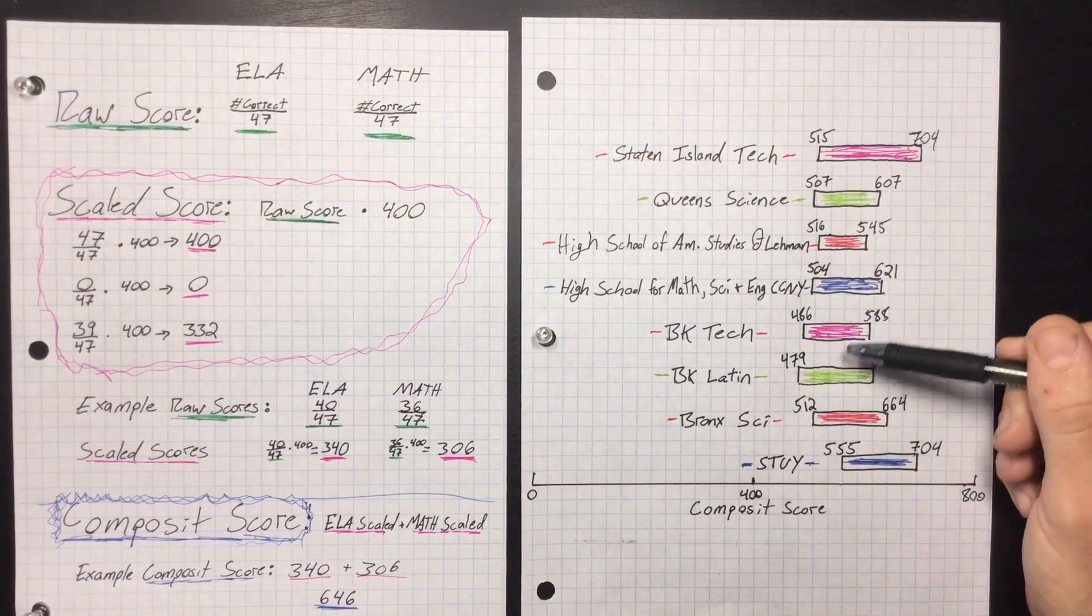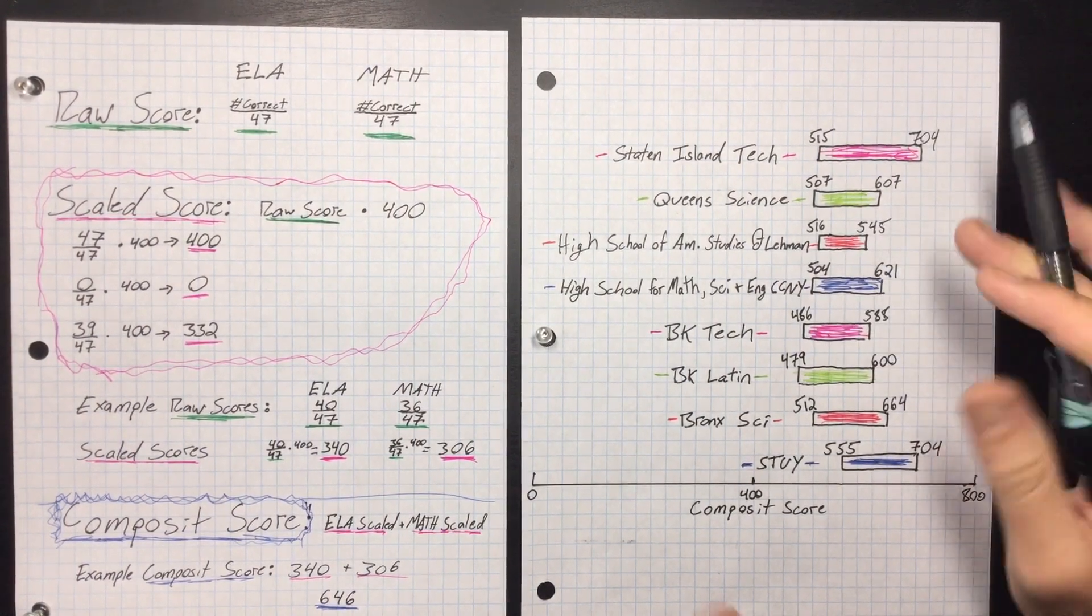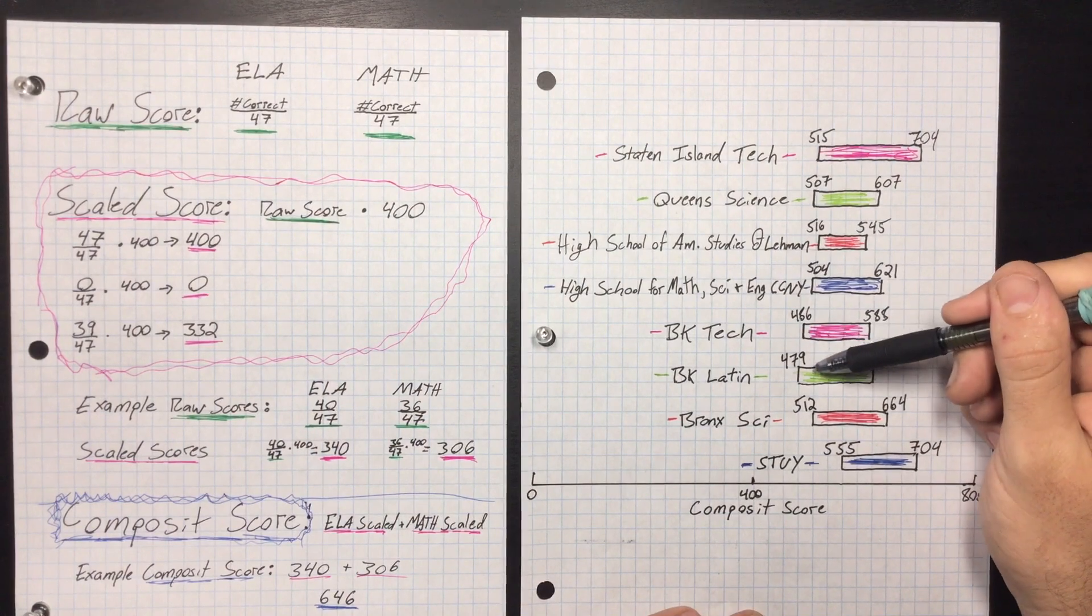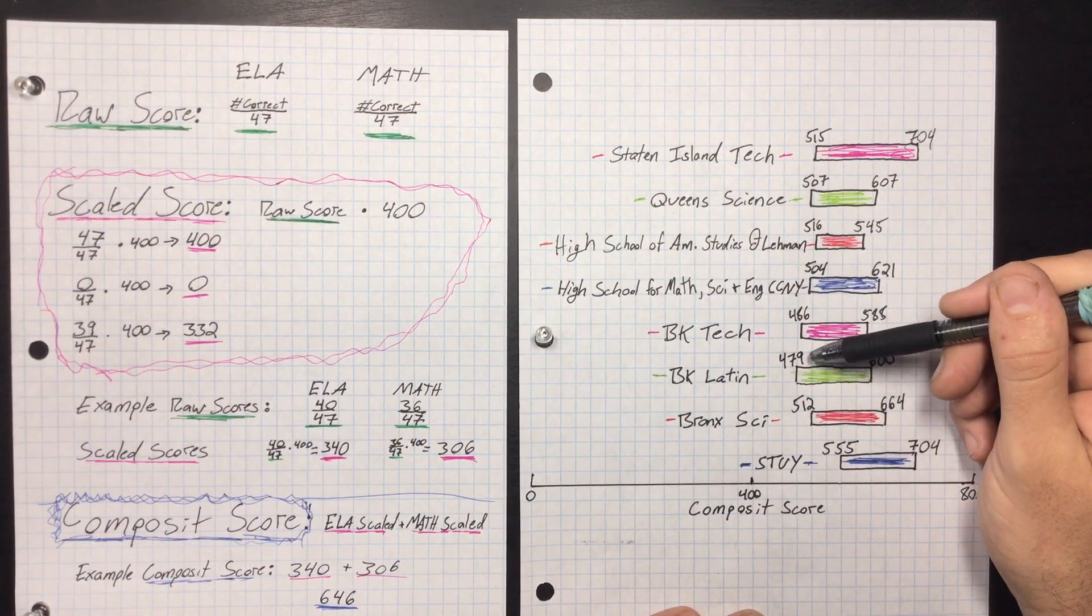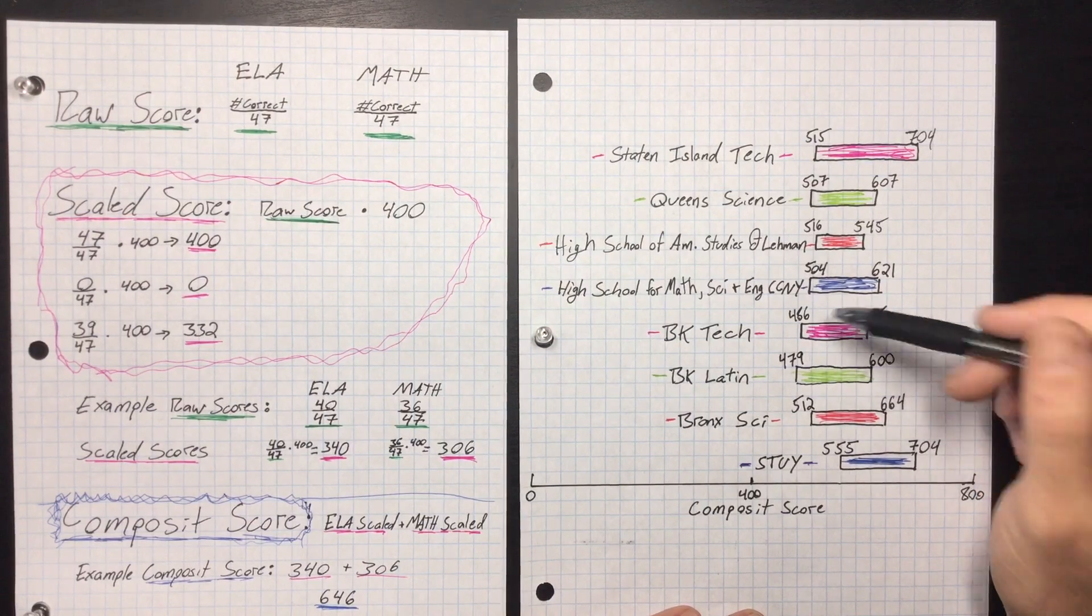Alternatively, the lowest score to get in has been said around 479. Really, that's like a 60% correct. That's how hard this test is. But don't get discouraged.